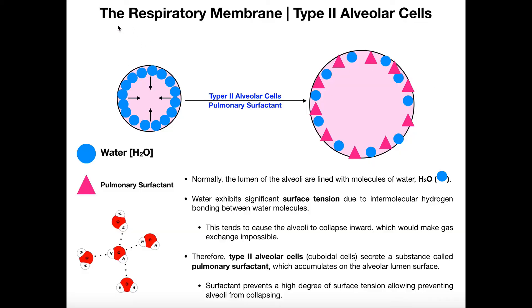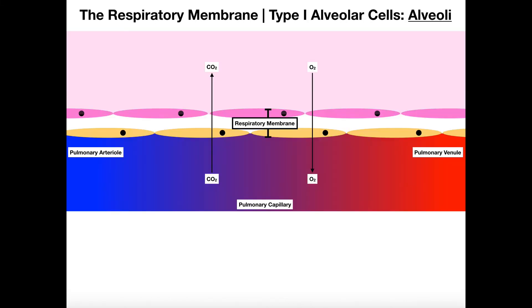In this video, we're going to continue our discussion of the respiratory membrane, but we're going to look at a very different type of cell. Previously, we looked at what are called type 1 alveolar cells, and these are really just the alveoli — the sites of gas exchange. If you want more detail on that, go back to the previous video.